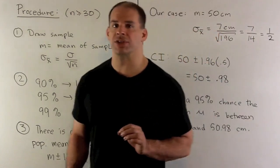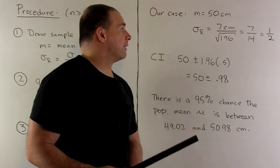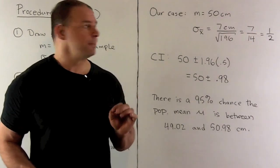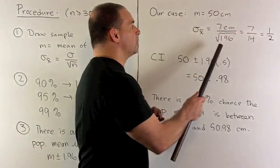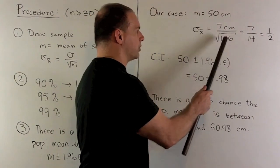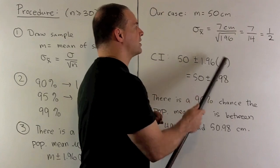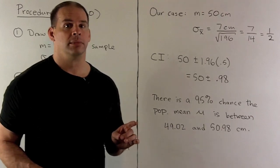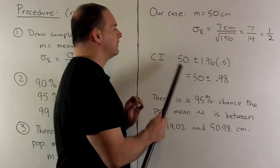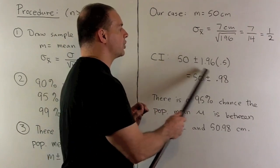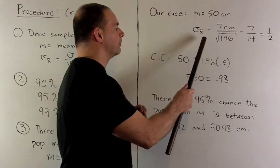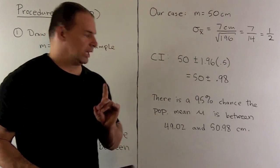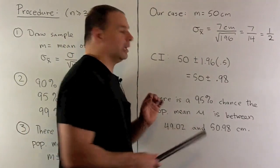Let's put some numbers to this. The mean of our sample is 50 centimeters. The standard deviation of the sampling distribution of the mean is the population standard deviation of 7 centimeters divided by the square root of 196, which is 14 — giving us one-half. So the confidence interval is 50 plus or minus 1.96 times one-half. There's a 95% chance the population mean mu is between 49.02 and 50.98 centimeters.